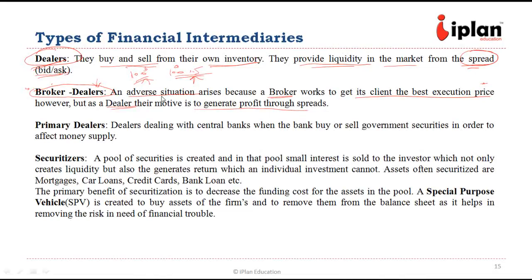Then we have one specific kind of dealer: primary dealers, who deal with the central bank. When a central bank wants to buy or sell government securities in order to increase or decrease liquidity in the market, they use primary dealers.